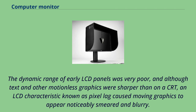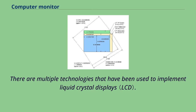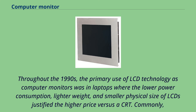The dynamic range of early LCD panels was very poor, and although text and other motionless graphics were sharper than on a CRT, an LCD characteristic known as pixel lag caused moving graphics to appear noticeably smeared and blurry. There are multiple technologies that have been used to implement liquid crystal displays. Throughout the 1990s, the primary use of LCD technology as computer monitors was in laptops where the lower power consumption, lighter weight, and smaller physical size of LCDs justified the higher price versus a CRT.